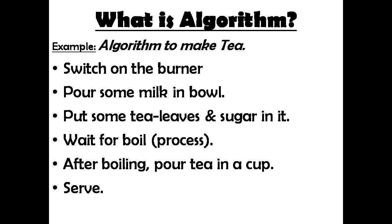Here is an example of an algorithm — a recipe to make tea. Step 1: switch on the burner. Step 2: pour some milk in a bowl. Step 3: put some tea leaves and sugar in it. Step 4: wait for a boil. Step 5: after boiling, pour tea in a cup. Step 6: serve. You cannot change the sequence of the steps if you want the same result.